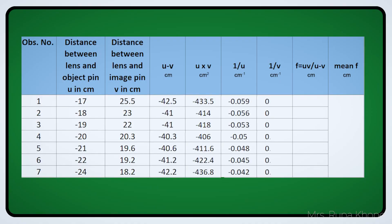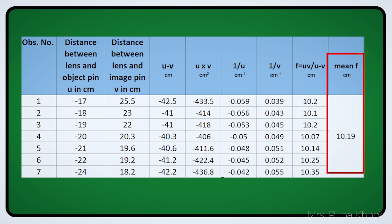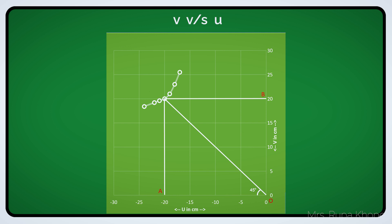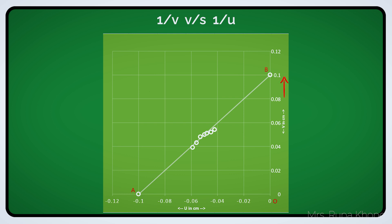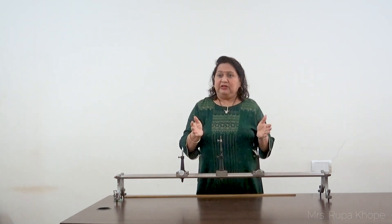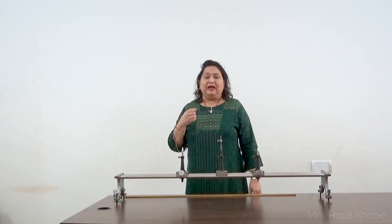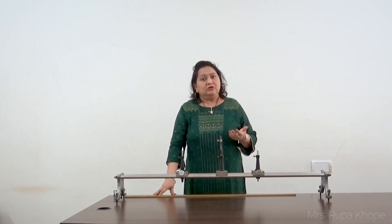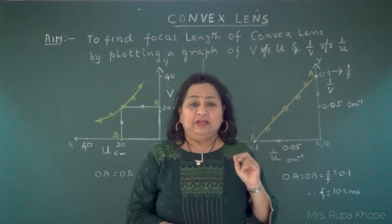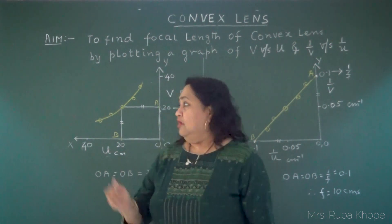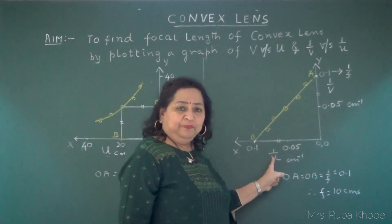Now we need to plot the graphs. After doing the calculations in the observation table, get the value of f. We need to find the value of f by plotting two graphs. First: v versus u — v is on the y-axis and u is on the negative x-axis because values are negative. Second: 1/v versus 1/u — similarly on the negative x-axis. After plotting the graphs, we will do the calculations to find the focal length.